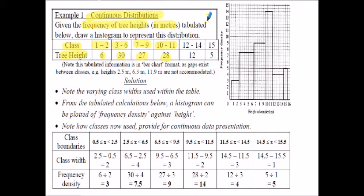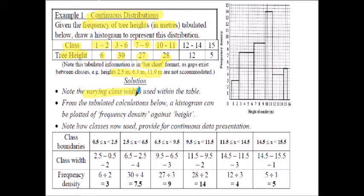What you notice from this information is that it's essentially bar chart information with gaps between the categories. For example, a height of 2.5 meters doesn't fit in a category, nor does 6.3 meters or 11.9 meters - which doesn't really make sense because heights of trees should be continuous data. So we're going to draw this into a histogram for continuous data. But note in this particular data there are varying class widths, so we need to work out the histogram by plotting the frequency density against the height.